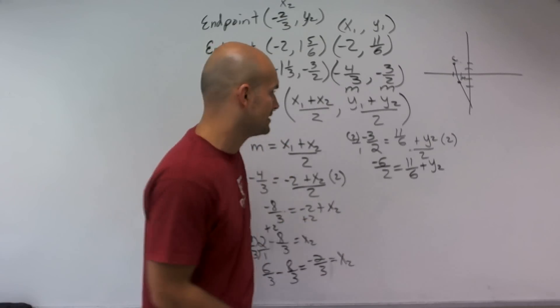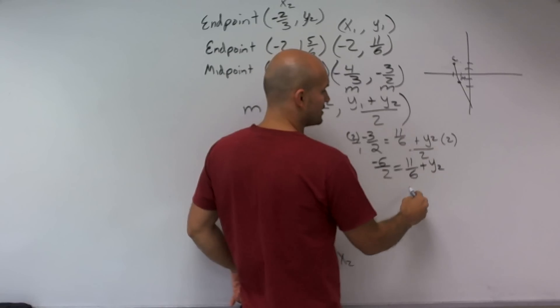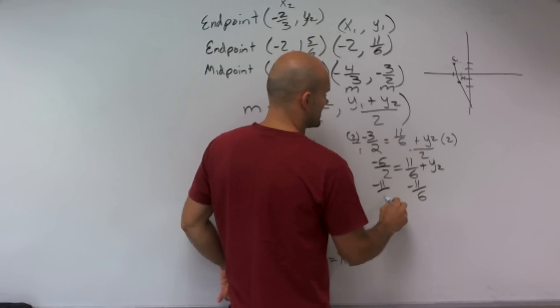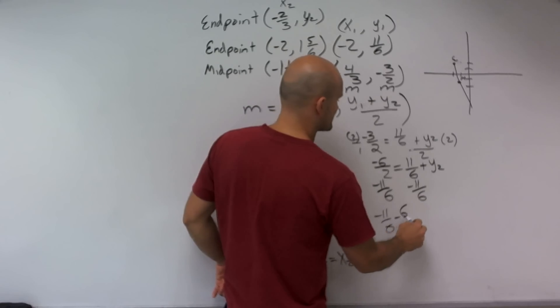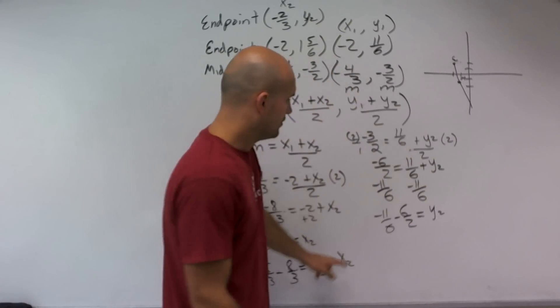But leave it as a fraction until you're complete with your fractions. This is going to help you combine your fractions. So now I have 11/6 plus y2. To get rid of the 11/6, I'm going to subtract 11/6. So therefore, I have negative 11/6 minus 6/2 equals y2. Again, you notice that these are not the same denominators.